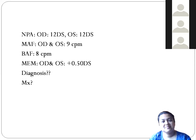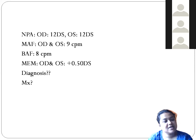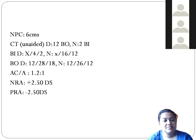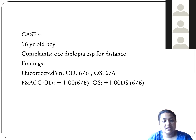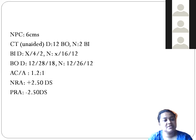The diagnosis is divergence insufficiency — a clear-cut case. There is 12 prism diopters of esophoria at distance and very minimal exophoria at near. The patient's primary complaint of diplopia for distance is consistent with this diagnosis.